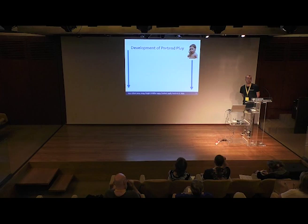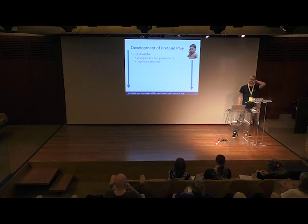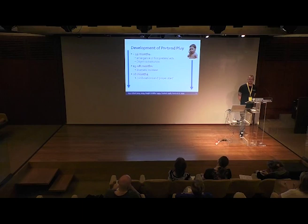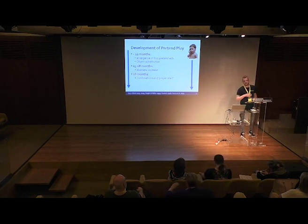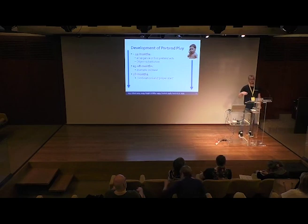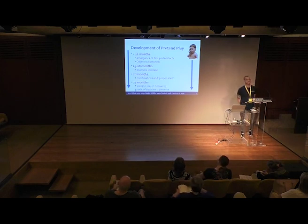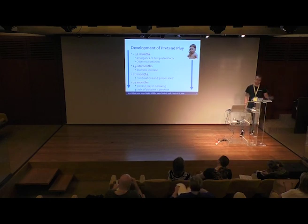A brief overview of how pretend play typically develops: around 12 months, we have the first emergence of pretend acts — very simple object substitutions like pretending to drink from a cup. From 15 to 18 months, this increases dramatically. At 18 months, proper pretend play begins with combinations — so rather than just drinking from a cup, children have an empty glass, pour imaginary water, then drink from it. At 24 months, pretend play is in full swing, and children spend about 5 to 20% of playtime engaging in pretend activities.